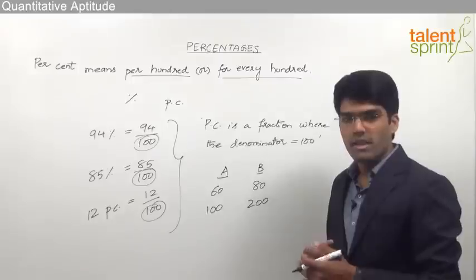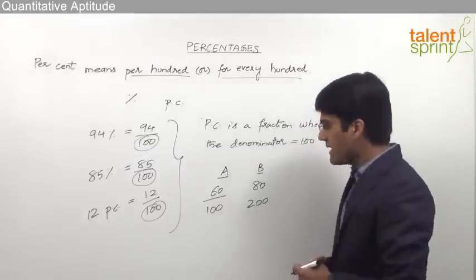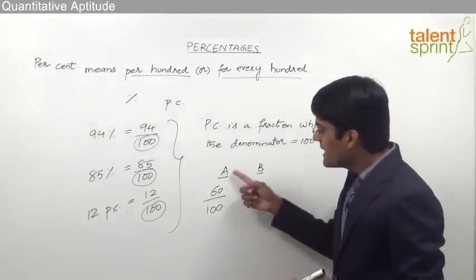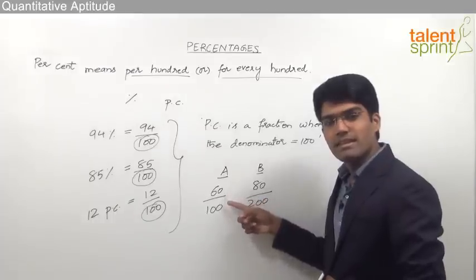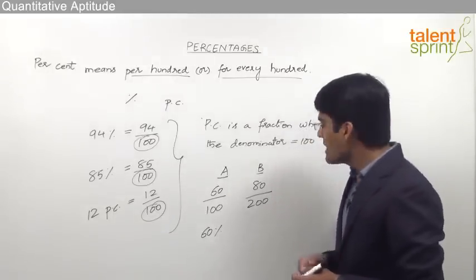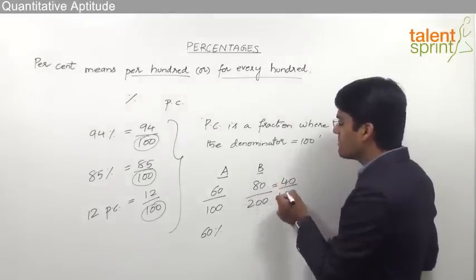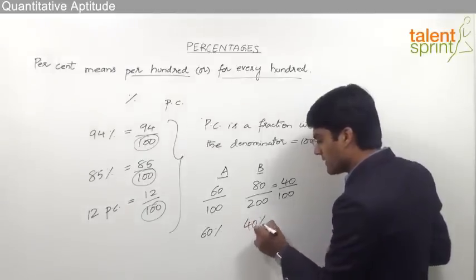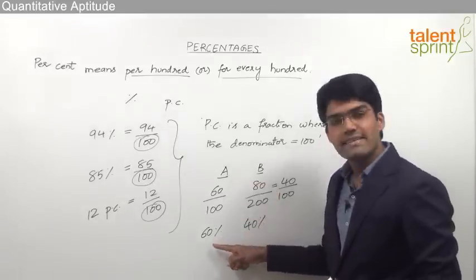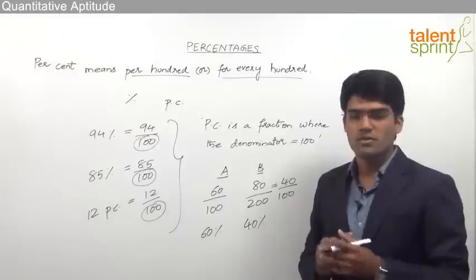When we try to compare their marks keeping in mind the maximum scores, we come to the conclusion that not B but A is a better student. A has got 60 out of 100, so A's percentage score is 60 percent. B has got 80 out of 200, which is equivalent to 40 out of 100, so B's percentage score is 40 percent. Comparing their percentage scores, A is better than B.